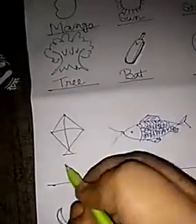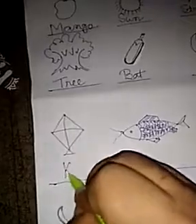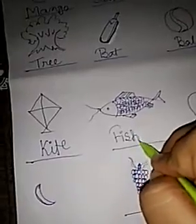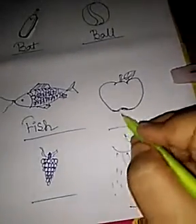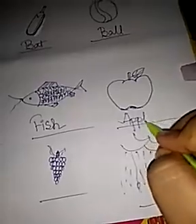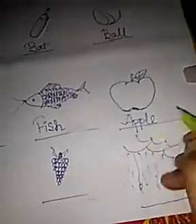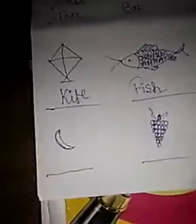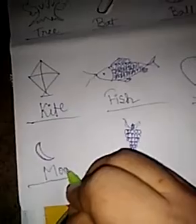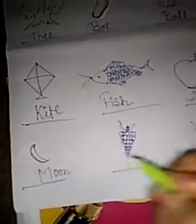This is Kite: K I T E. This is Fish — F for Fish: F I S H. Now this is Apple: A P P L E. This is Moon: M O O N.